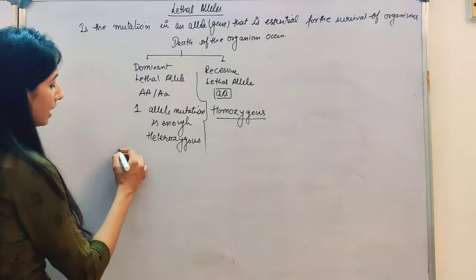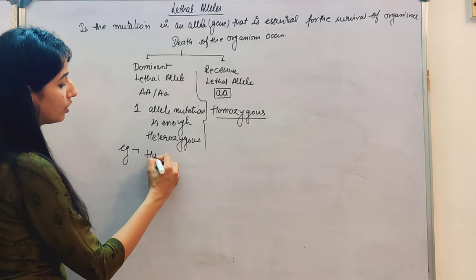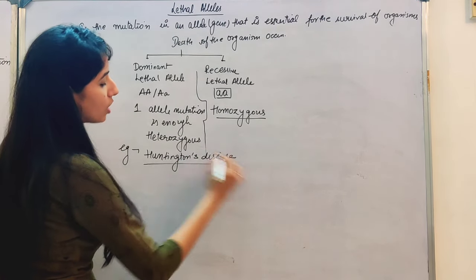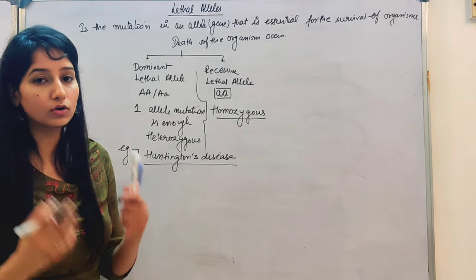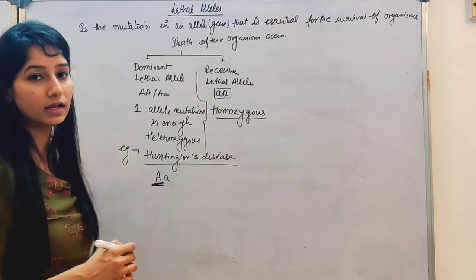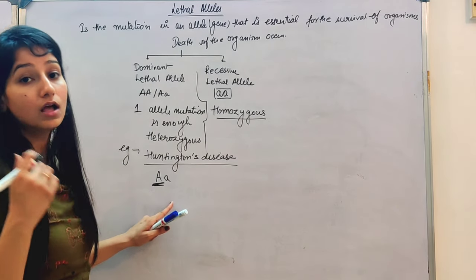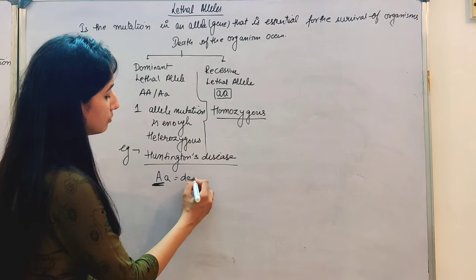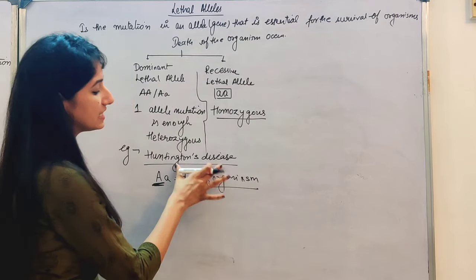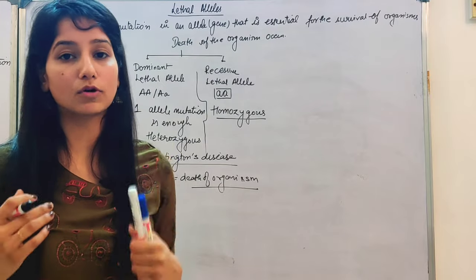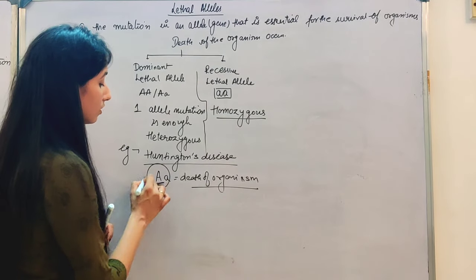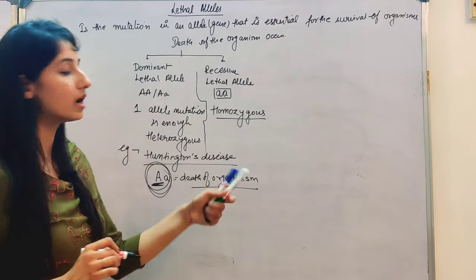For example, in dominant lethal alleles, we can take the example of Huntington's disease. This disease is caused by a dominant autosomal mutation, due to which the death of the organism occurs. It is a progressive disorder of the brain, and that is why the death of the organism occurs. So Huntington's disease is a dominant lethal allele condition.